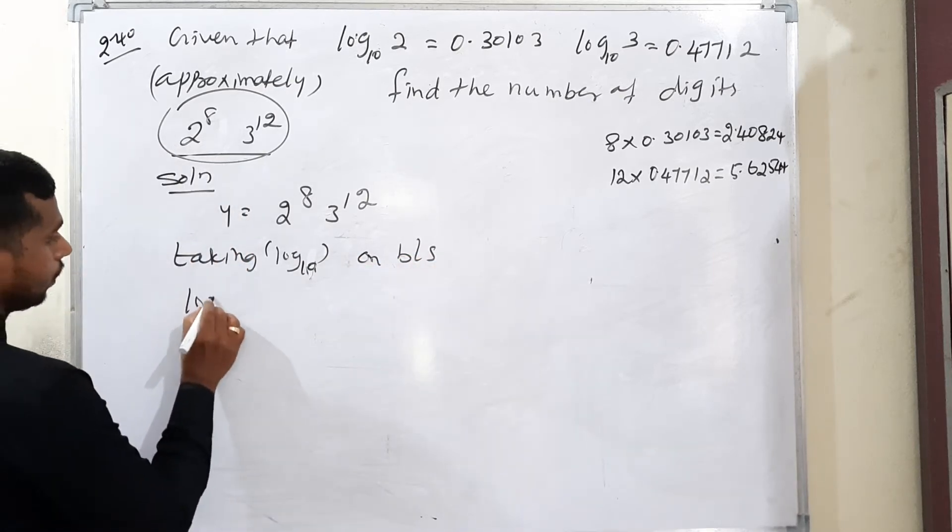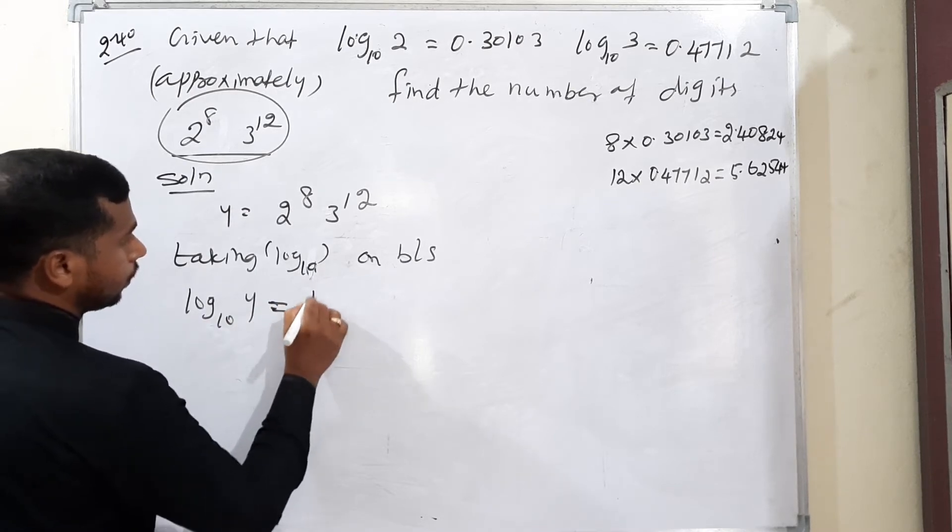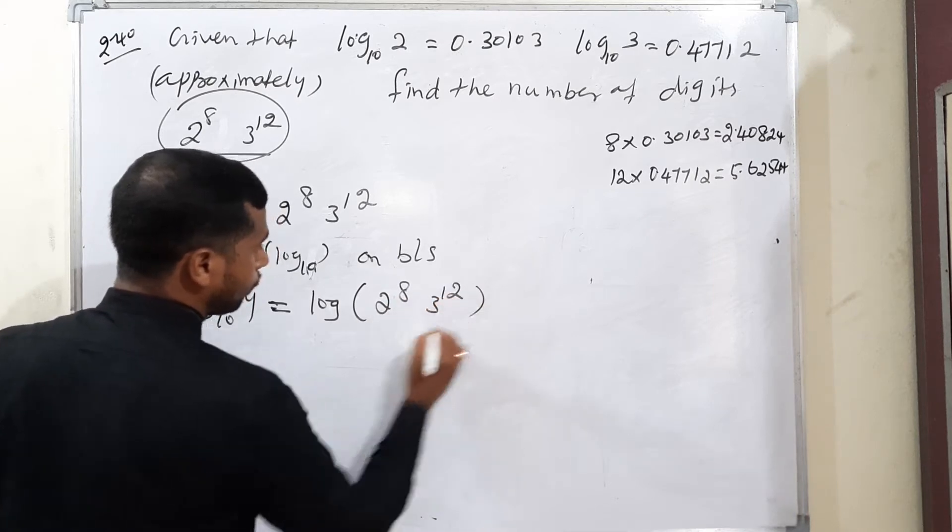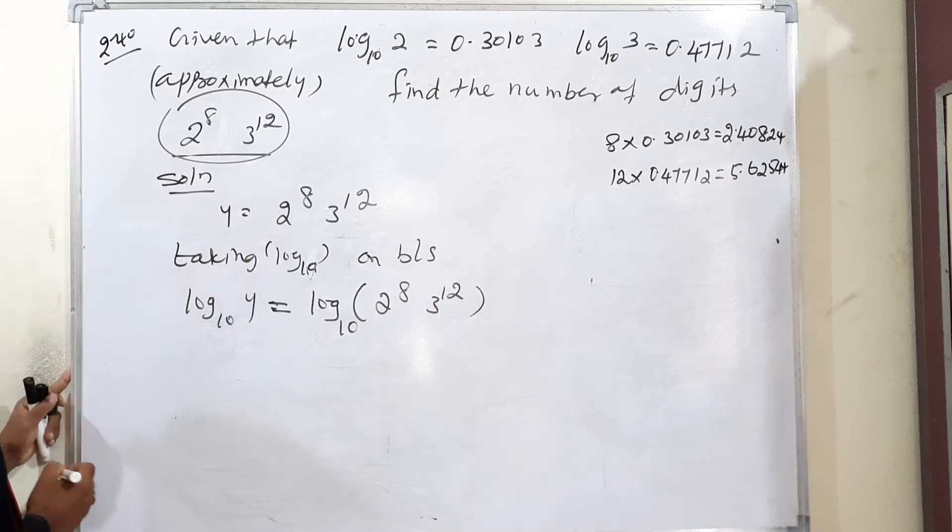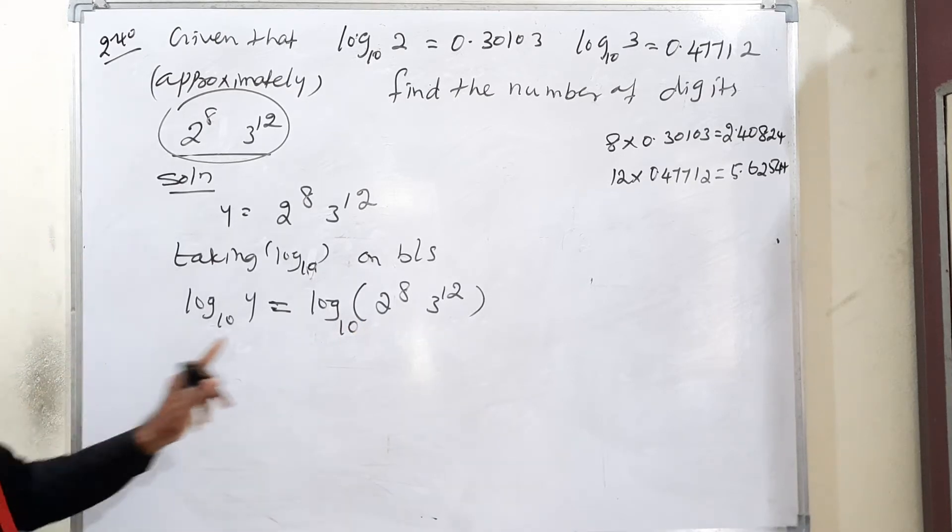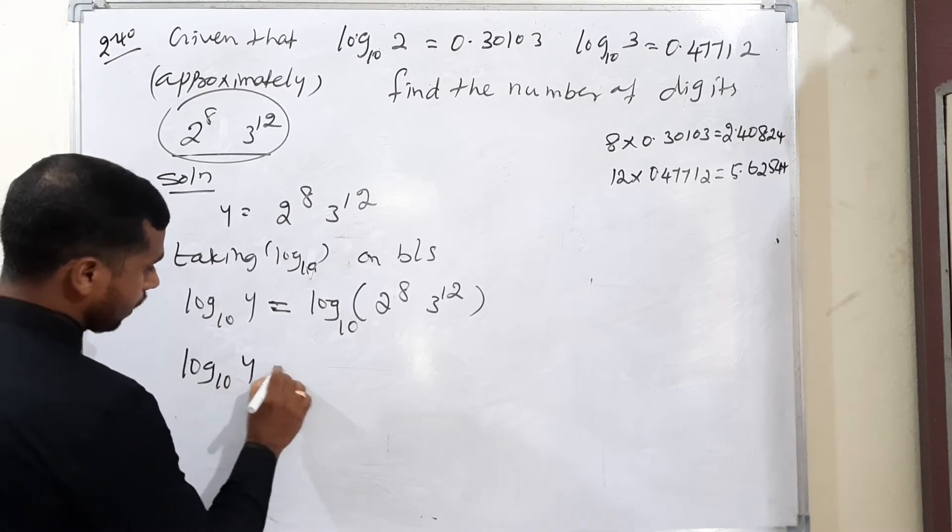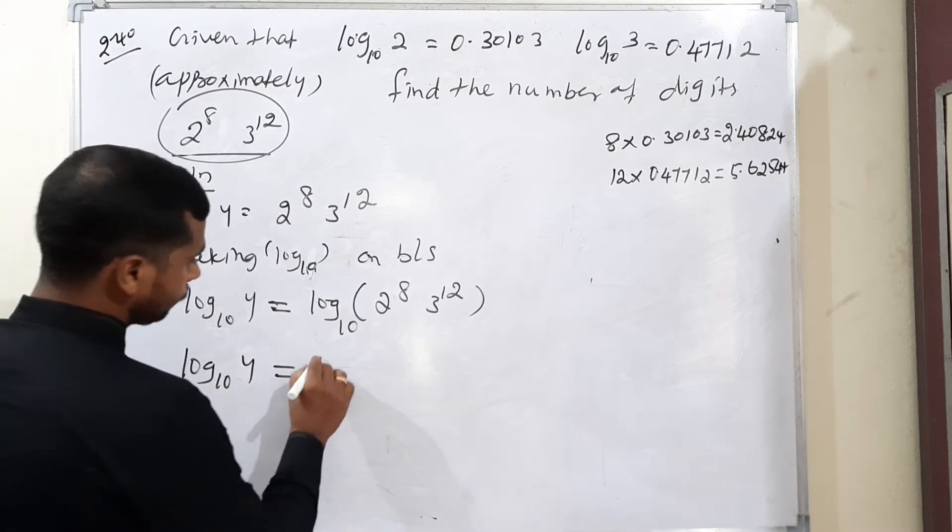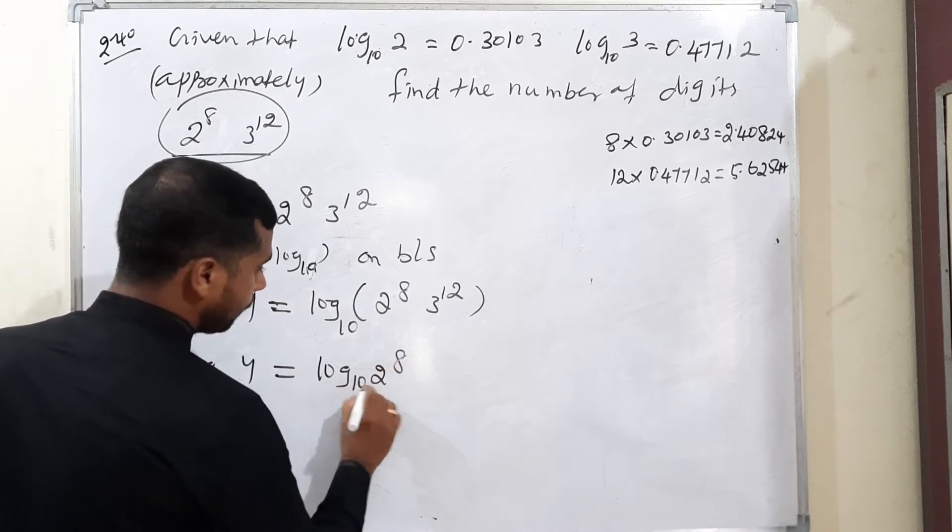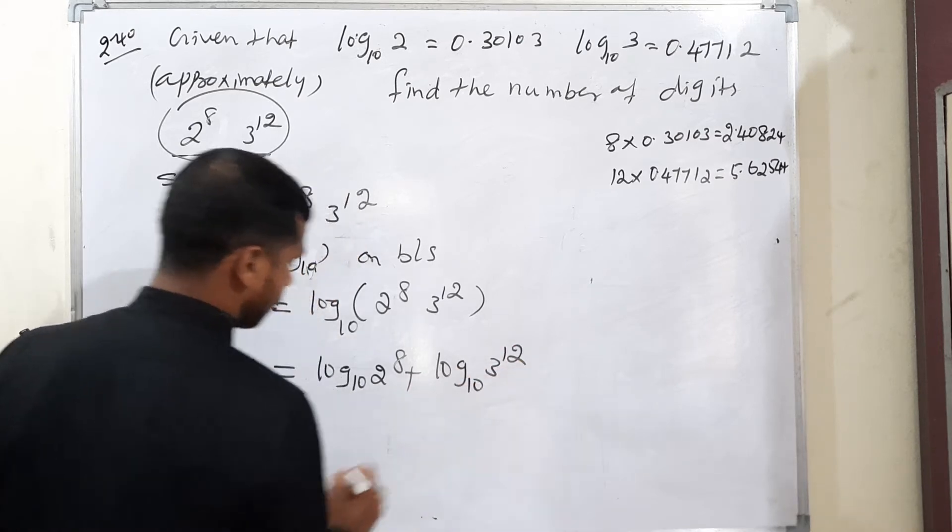Log y base 10 is equal to log of 2 to the power 8, 3 to the power 12 base 10. Now, this is product rule. Product rule means plus, convert to plus. Therefore, log y base 10 is equal to log 2 to the power 8 base 10 plus log 3 to the power 12 base 10.